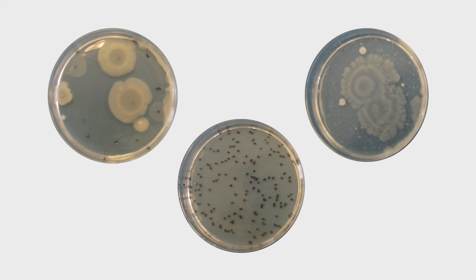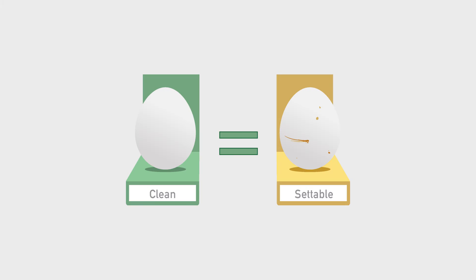We counted the number of microbes — bacteria — on each egg exactly as they came off the belt. They were not cleaned in any way. Even clean eggs have some bacteria on them, but there was no significant difference in the amount of bacteria on clean eggs when compared to settable eggs.